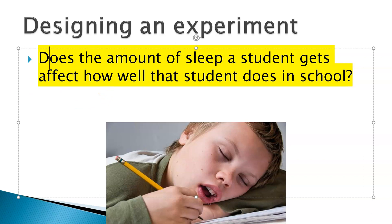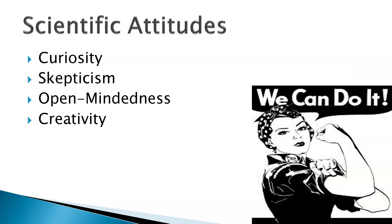In science, there are a couple of scientific attitudes we need to have. To be a good scientist, you have to be curious — naturally curious about the world around you. You need to be skeptical. You need to be open-minded — open to learning new ideas. And you need to be creative — we have to come up with ways of solving problems.